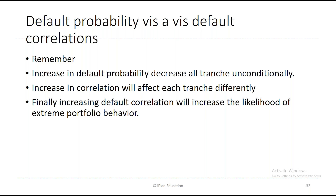Increasing default correlation will increase the likelihood of extreme portfolio behavior. This can be logically connected to the subprime crisis: when all assets were correlated, default correlation increased — which risk models failed to predict. Models used by risk management departments assumed constant correlation, but when market correlation increased, the VaR computed was far less than actual losses, ultimately leading to the subprime crisis.